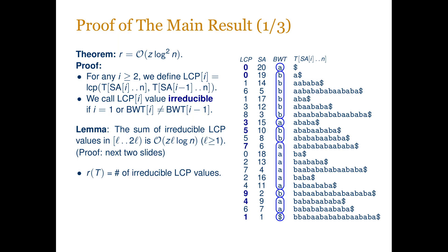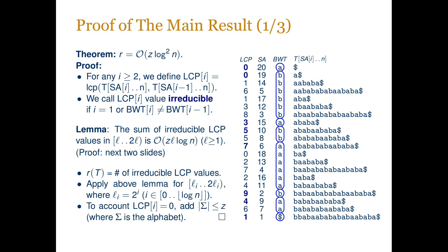The above lemma is all we need to prove our main result. The number r of runs in the BWT equals the number of irreducible LCP values. We classify all BWT runs into log(n) buckets based on the value of their corresponding irreducible LCP — more precisely, we use intervals of the form [2^i, 2^(i+1)) for all i between 0 and log n. The number of elements in a bucket is maximized when all values are as small as possible; even then, there can be at most z·log(n) elements in a single bucket. To account for LCP values equal to zero, we observe that their number is bounded by the alphabet size, which is at most z since there is at least one phrase for each distinct symbol in the text.